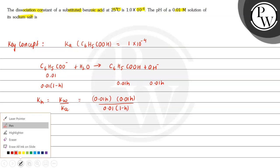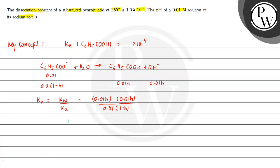Substituting values: Kw is 10⁻¹⁴ divided by Ka which is 10⁻⁴, giving 10⁻¹⁰. This equals 0.01H² divided by (1 − H). Since H is very small compared to 1, we approximate 1 − H ≈ 1. Solving for H, we get H² = 10⁻¹⁰ divided by 0.01, so H² = 10⁻⁸.